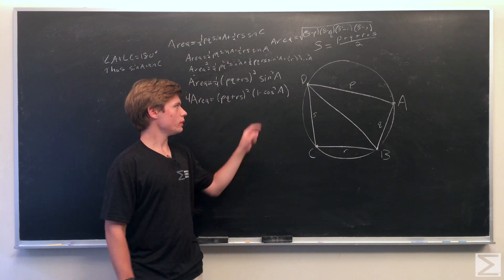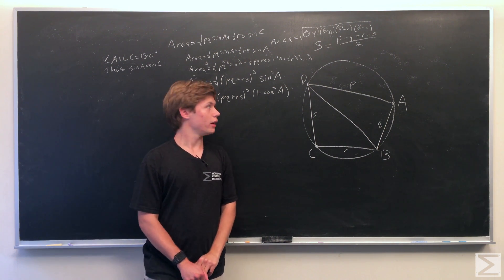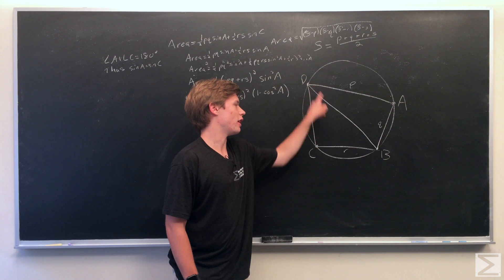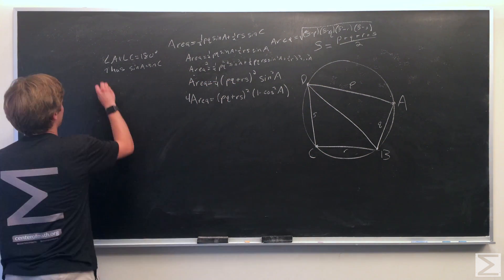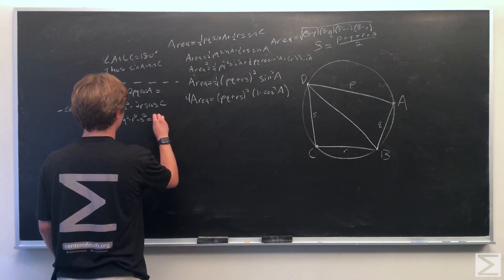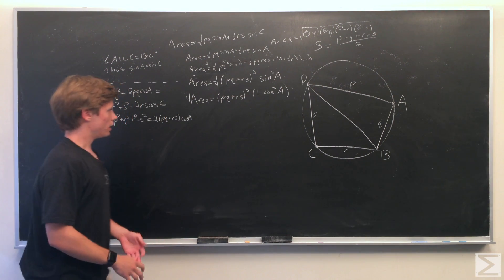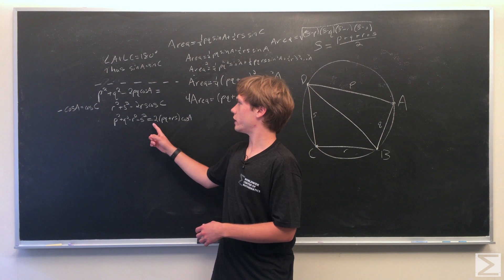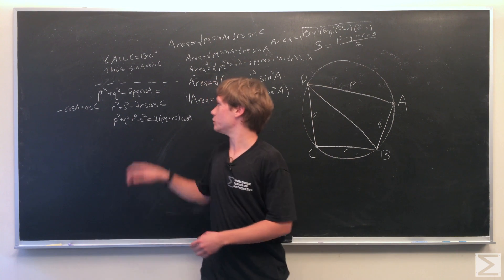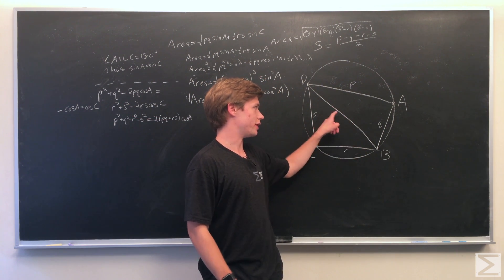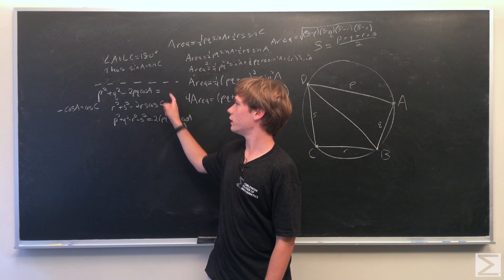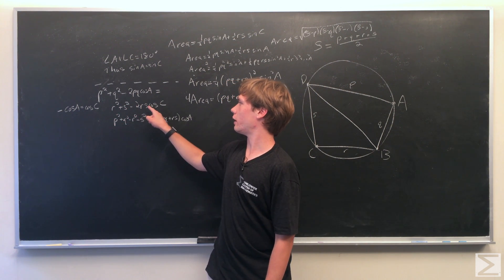So now what we do is we want to play with cosine squared of a using the fact that these two triangles share the common line db. We use the law of cosines to find the length of this line. So we set them equal to each other because it's a common line. We see that p squared plus q squared minus two p q cosine of a is equal to r squared plus s squared minus two r s cosine of c.